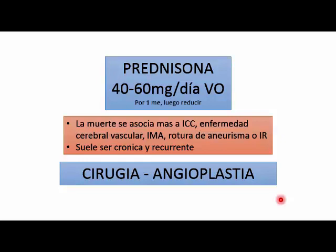El paciente dependiendo del grado de compromiso que tenga, disección, aneurisma en la aorta, va a ir a un proceso quirúrgico donde generalmente se le hace una angioplastía. Hoy en día se puede reemplazar todo el cayado por completo; se usan prótesis vasculares completas y la cirugía es bastante sencilla hoy en día. La muerte se asocia generalmente a insuficiencia cardíaca o complicaciones vasculares o cerebrovasculares por trombosis. Es una vasculitis crónica y recurrente con la posibilidad de que produzca aneurismas y disección con mucha frecuencia.